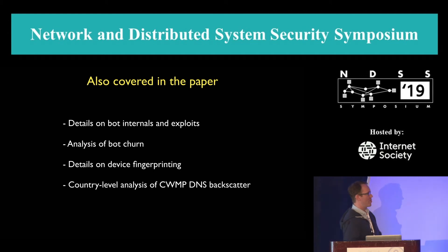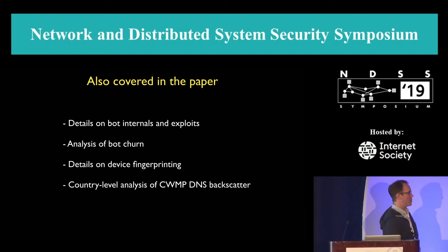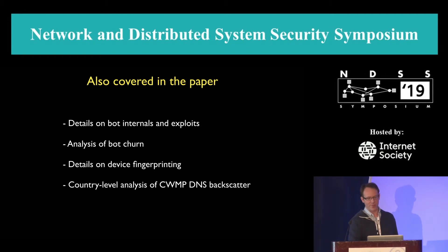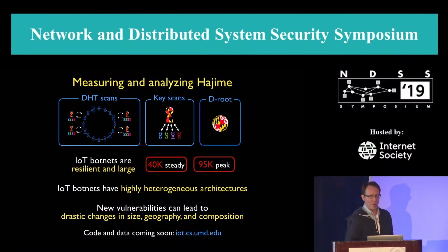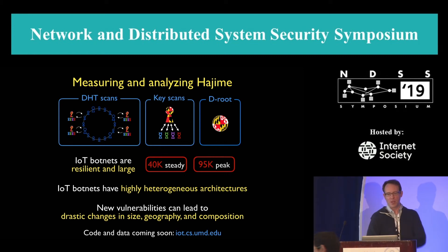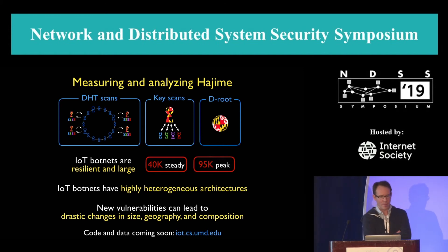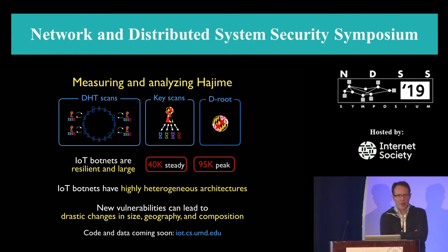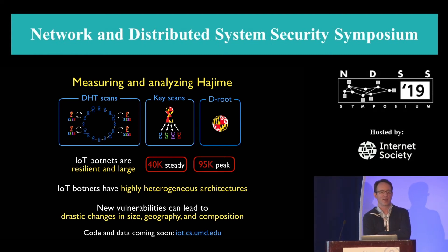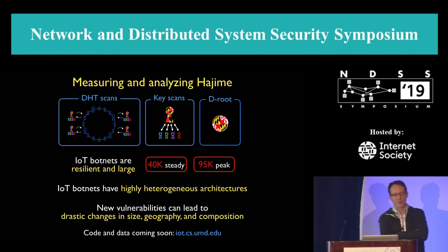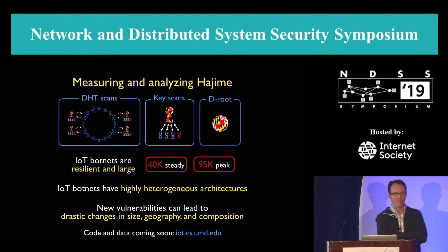We cover a number of other things in our paper: more details on the internals of the bot, analysis of bot churn, and more details on device fingerprinting. In summary, we're measuring and analyzing Hajime. We've amassed large datasets of DHT scans, public keys, and DNS data. The botnet is quite large and resilient, and our analysis highlights the heterogeneous nature of IoT and how overnight its composition can change. We'll be making all of our code and data available on our website. Thank you.